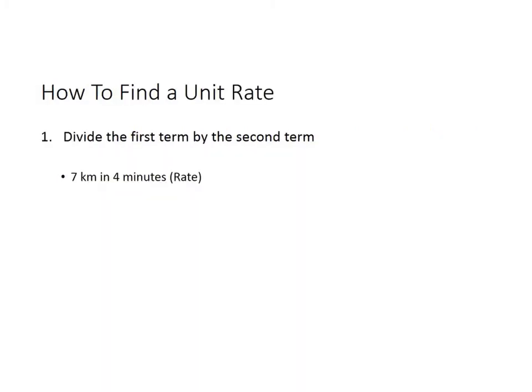How to find a unit rate? Well, if you have a rate, in this case 7 kilometers in 4 minutes, you need to break that down to find out how many kilometers they're going for every one minute. By doing that, you break it down to a unit rate. To do this, you need to divide the first term by the second term.